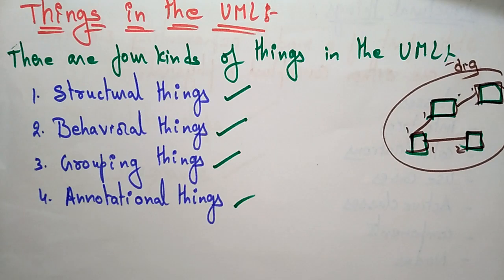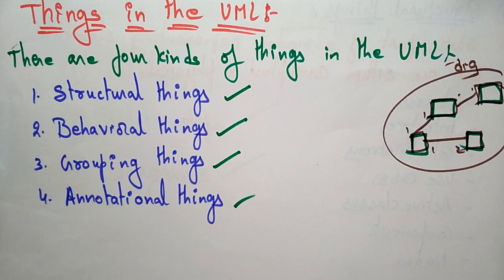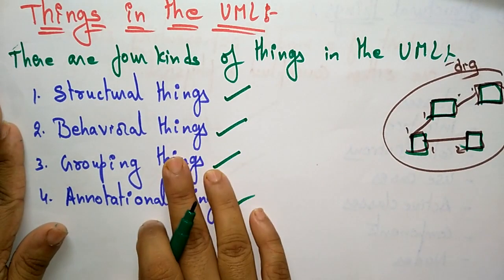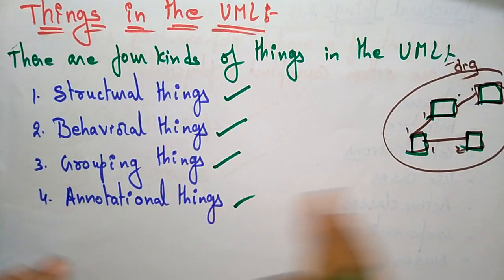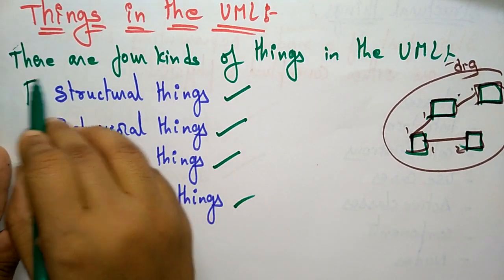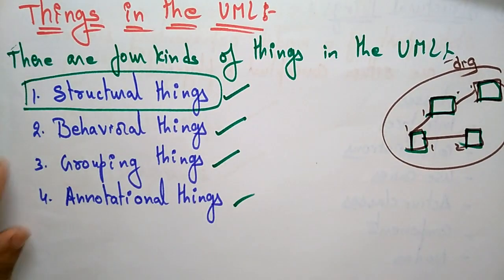Hi students, let us continue with the topic: the things in the Unified Modeling Language. The thing is one of the building blocks of UML. The things are divided into four kinds: structural, behavioral, grouping, and notational. Now let us see the first one, that is the structural thing.